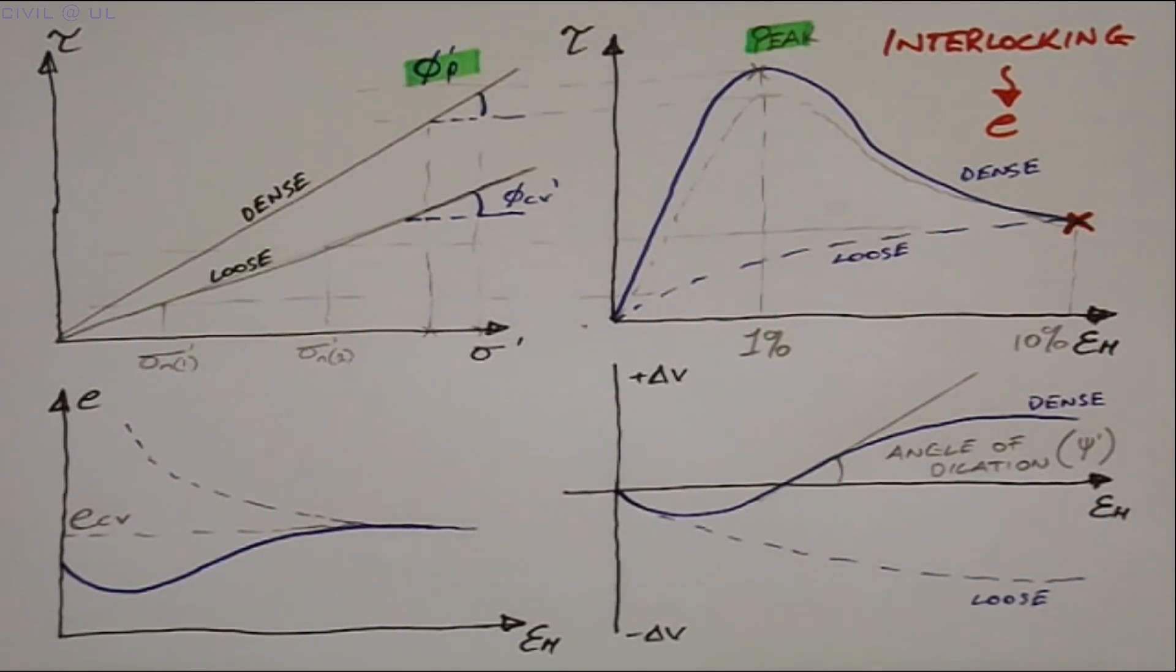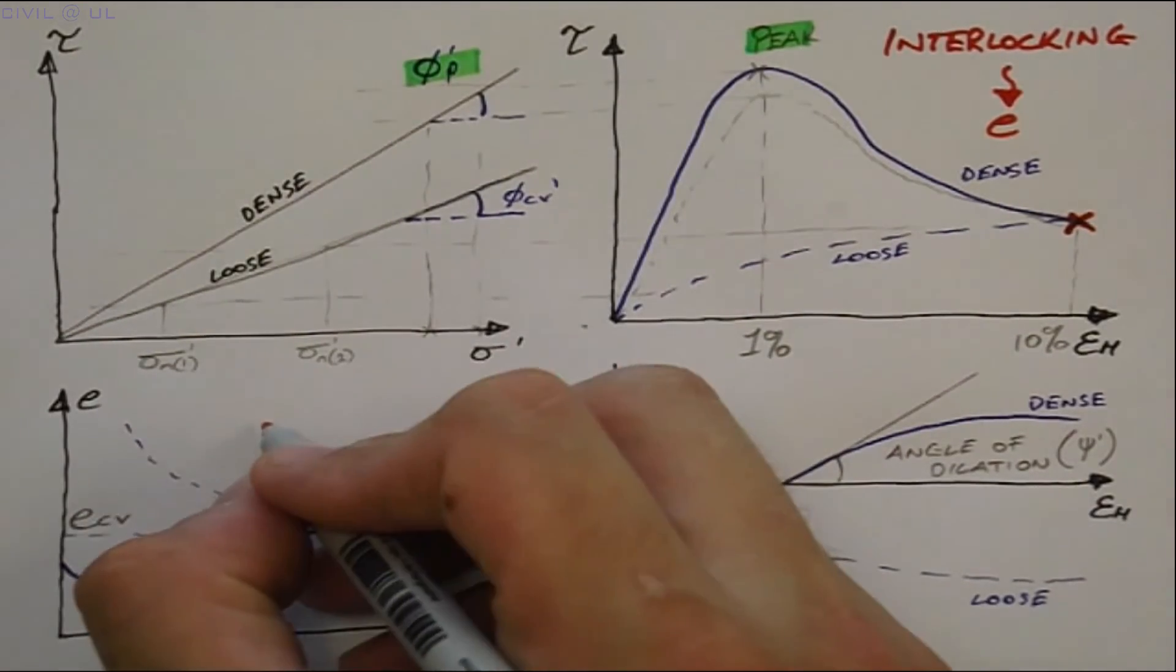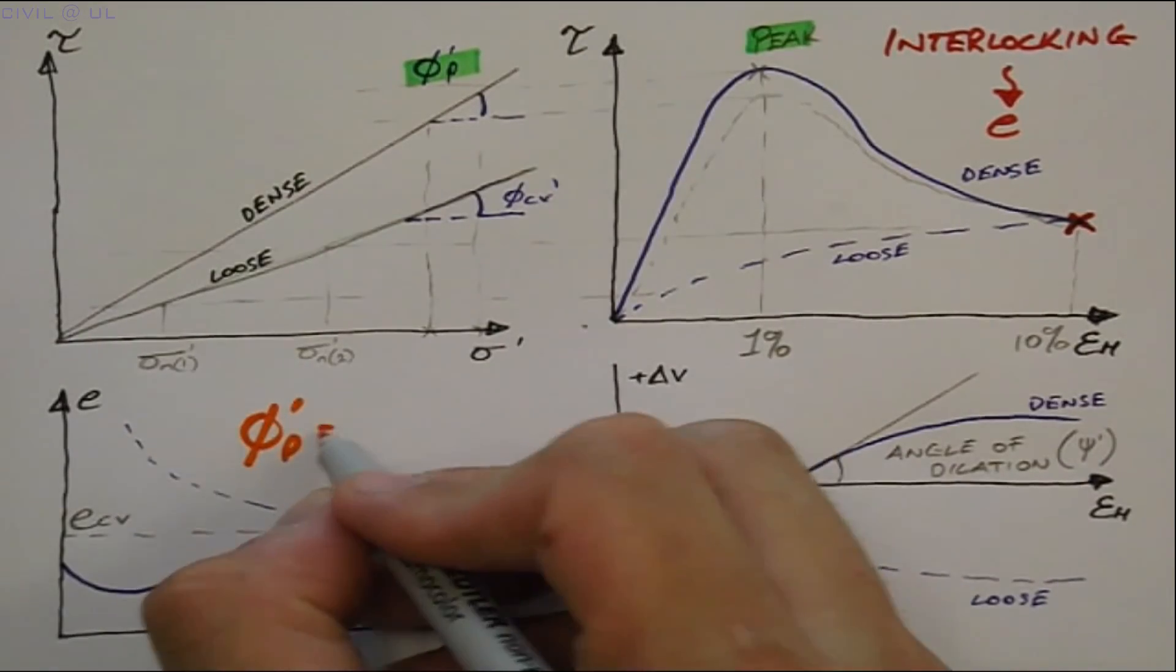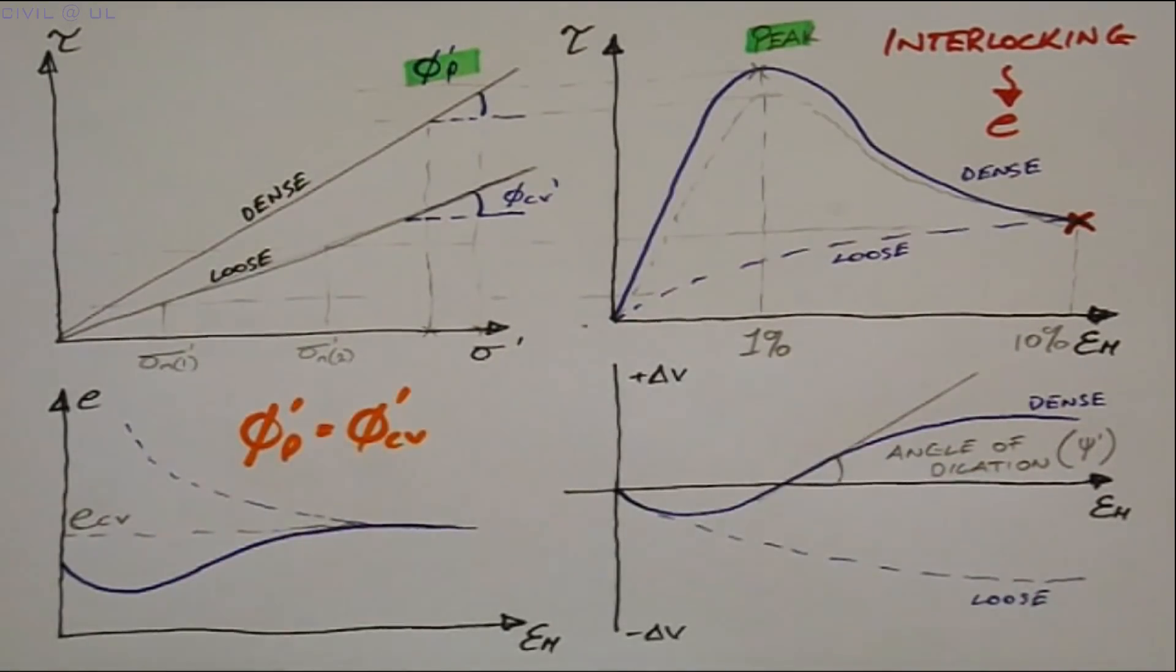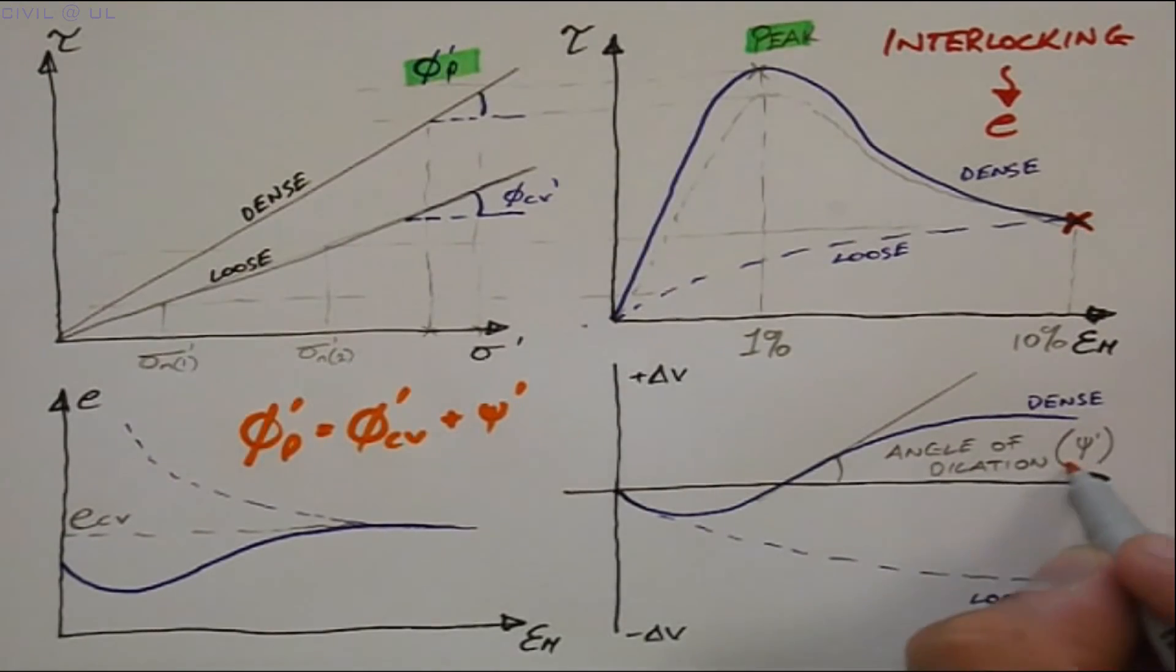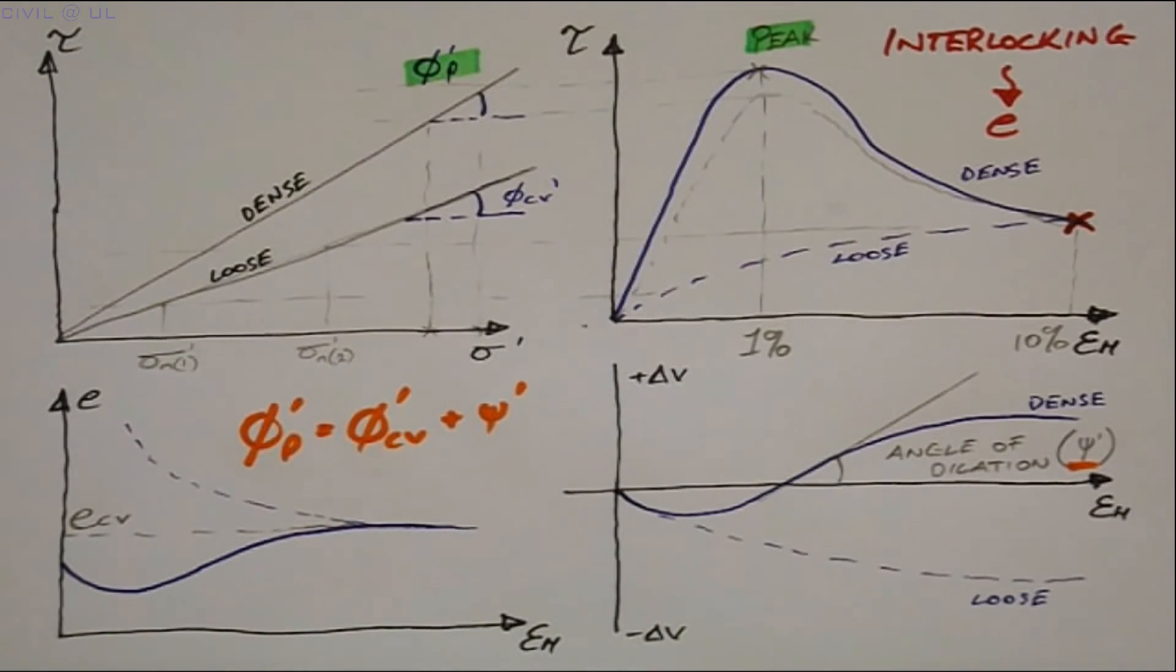Another way of considering this, is the soil has a constant frictional resistance given by Phi-CV, and this can be added to by an amount equal to angle of dilation, depending on the initial state of the soil.